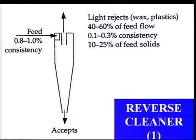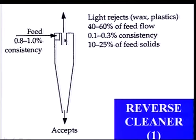Here is an example of a reverse hydrocyclone, used to remove low-density contaminants like wax and plastic. In this case, we take the same hydrocyclone but increase the diameter of the underflow and reduce the diameter of the overflow tube. When the fiber-water-contaminant mixture comes in, relatively clean fibers remain while low-density materials migrate towards the center and are removed through the overflow tube.